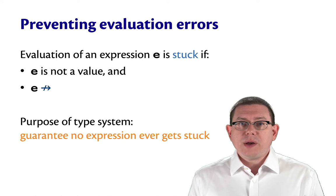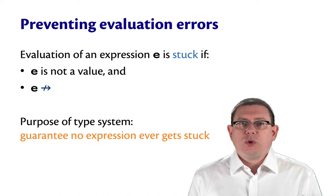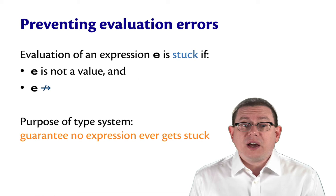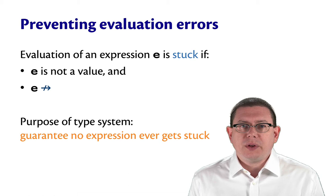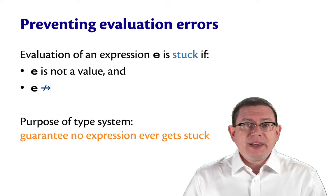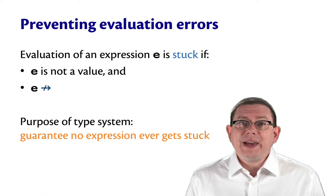The kinds of evaluation errors we're looking to prevent can be described as those in which evaluation gets stuck. So evaluation of an expression e is stuck if e is not a value, but e can't take a single step. So we're back to the single step model here in order to give this definition. That means it's stuck because it's not yet reached a value. Computation is not yet finished, and yet there's no way to continue going forward from there.